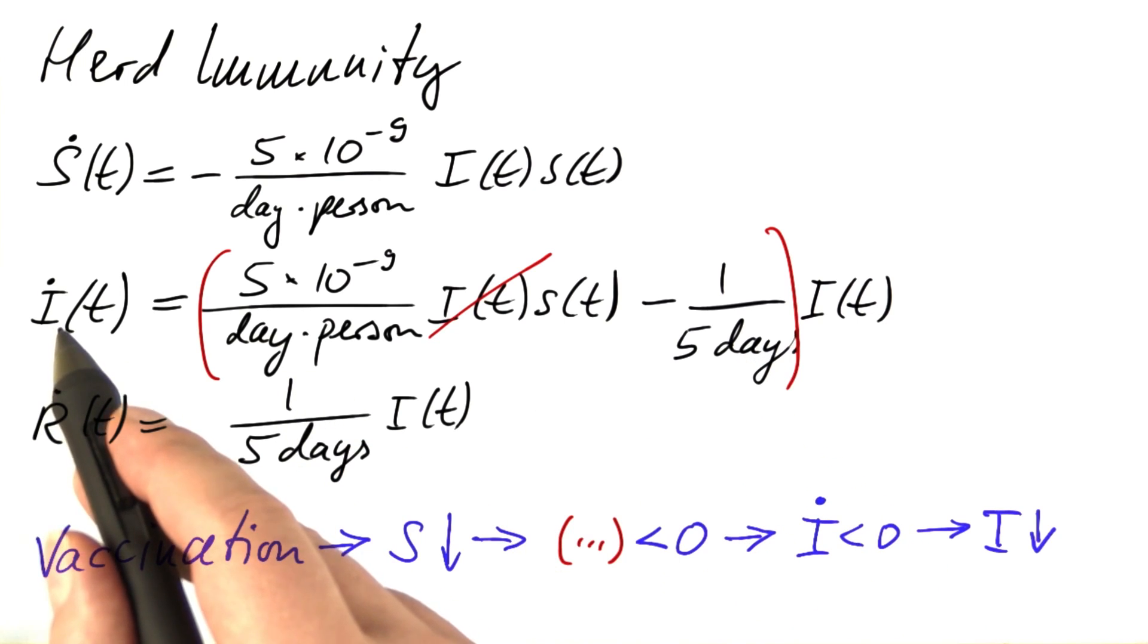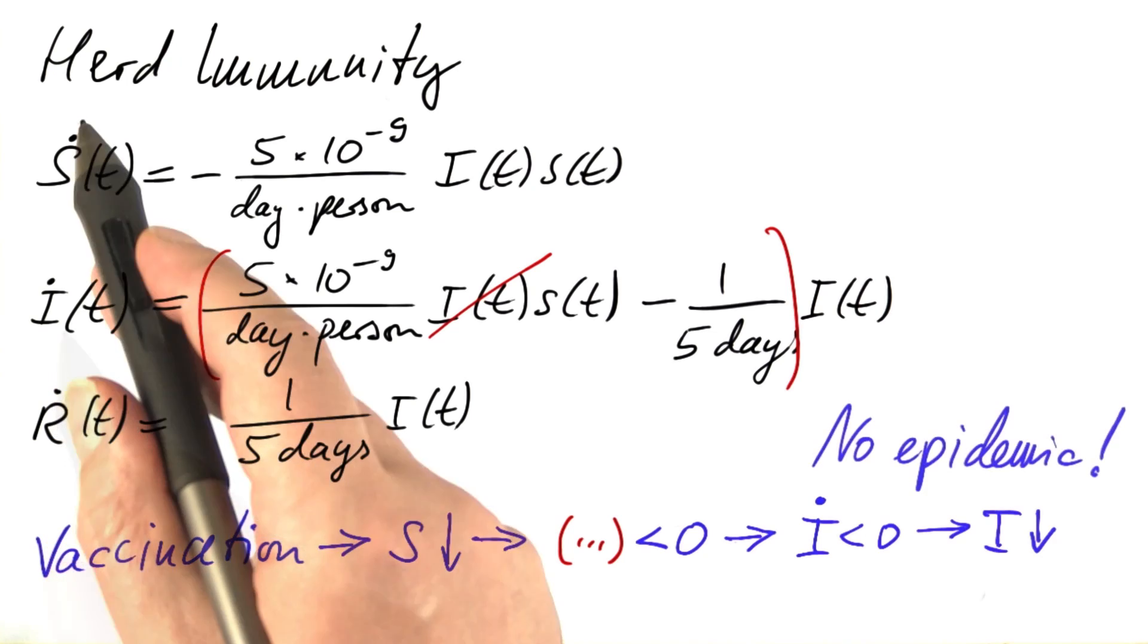The number of susceptible persons can only decrease. When enough people have been vaccinated, we can never have an epidemic. This is called herd immunity.